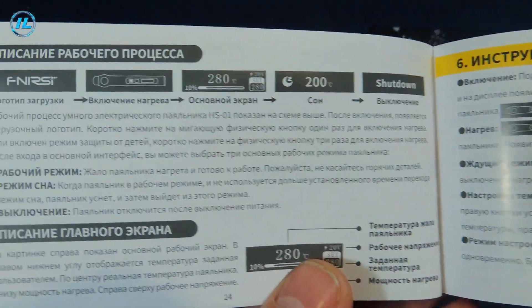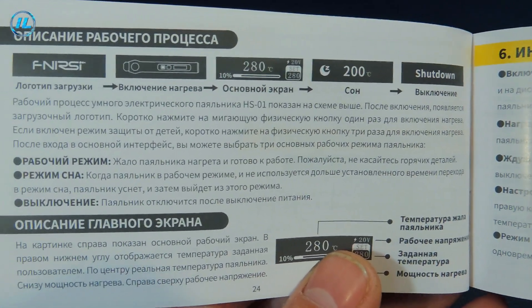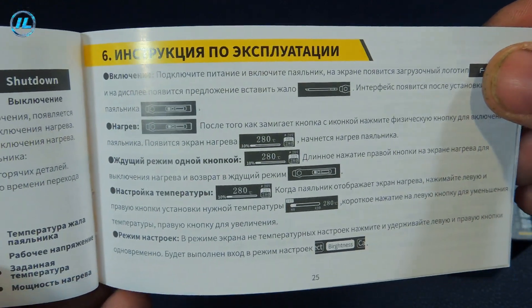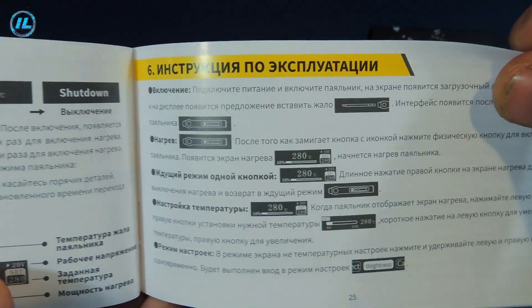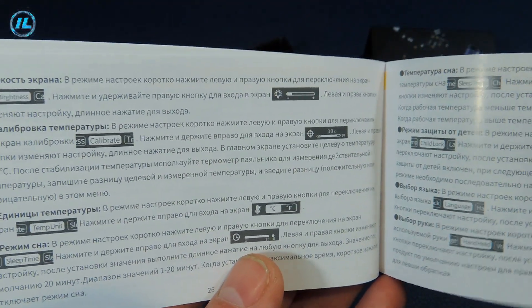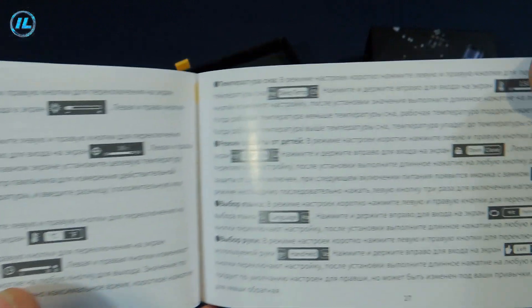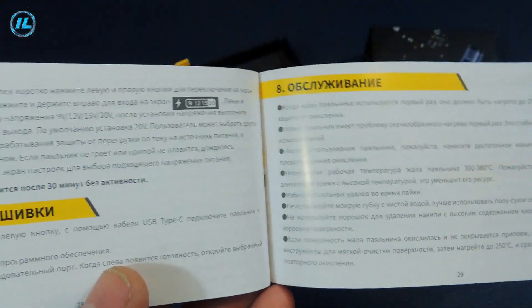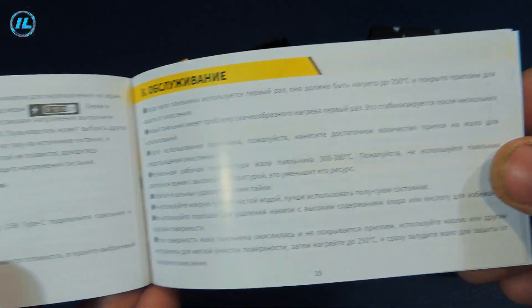It also describes in detail the process of turning on, setting up and operating the soldering iron. The following two pages explain all the items in the menu mode. I will tell you about them a little later when reviewing the soldering iron. The last pages give tips on soldering iron maintenance and safety.